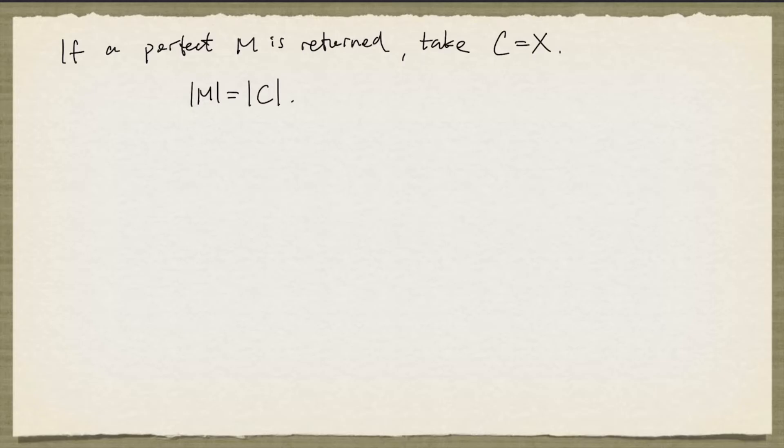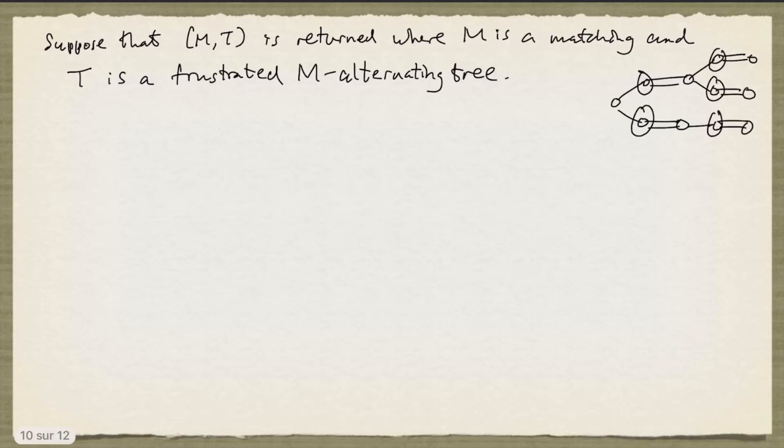Otherwise, the algorithm will return a pair M, T, where M is a matching and T is a frustrated M alternating tree.